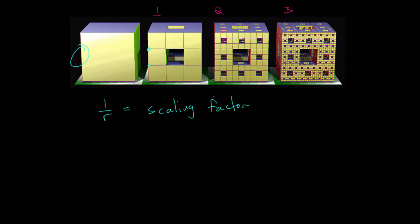notice that it was split into three equally sized pieces. So in this case, each of these pieces are one third of the original side length. You can see that for each of these side lengths, they are one third of what they used to be. So we can say that our scaling factor is simply 1 over 3.